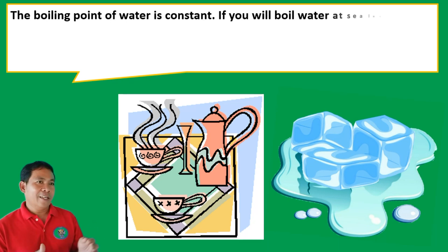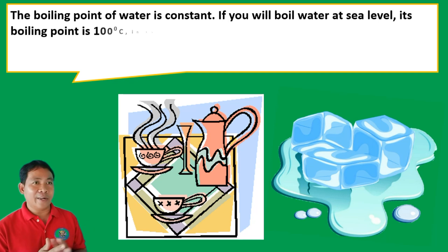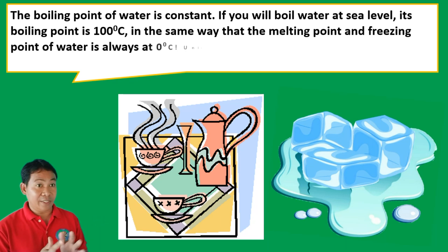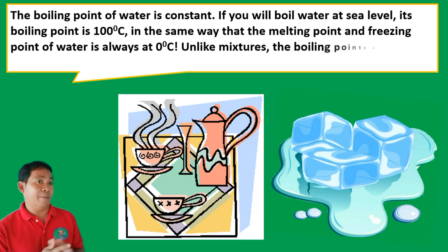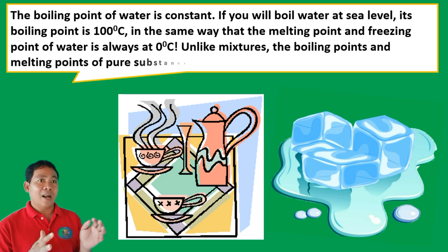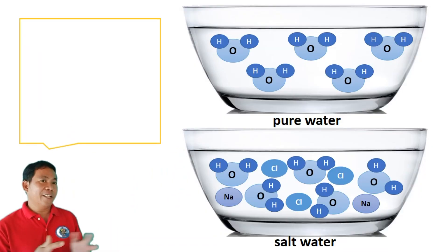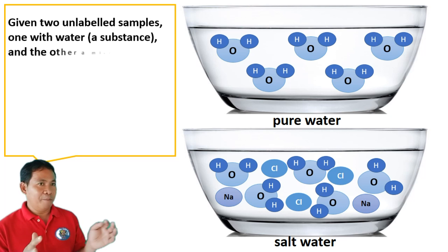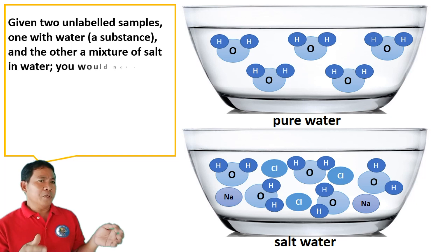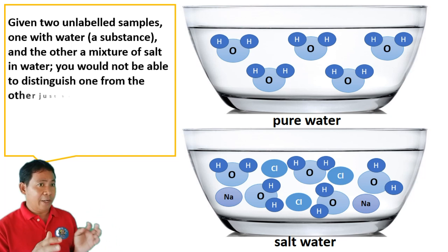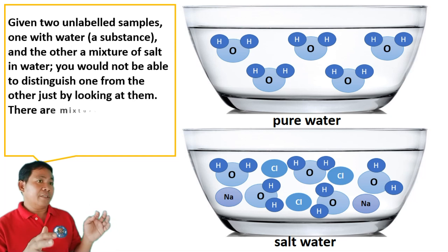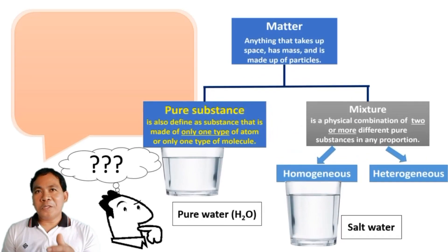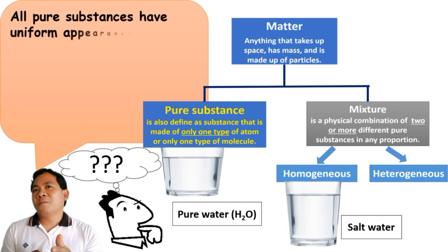The boiling point of water is constant. If you boil water at sea level, its boiling point is 100 degrees Celsius, and the melting point and freezing point of water is always 0 degrees Celsius. Unlike mixtures, the boiling points and melting points of pure substances are definite. Given two unlabeled samples — one water and the other a mixture of salt and water — you would not be able to distinguish one from the other just by looking at them.